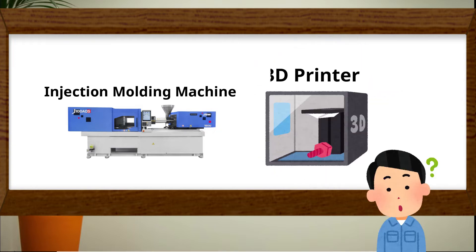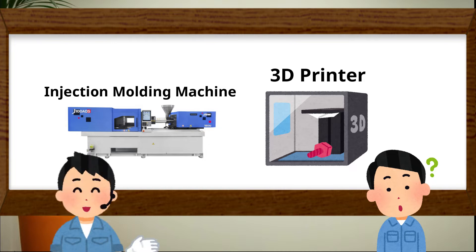Recently, I heard about 3D printer. What is the difference between 3D printer and injection molding? Both can make plastic product, right? Yes, both are the same in terms of making plastic product, but the process is different.